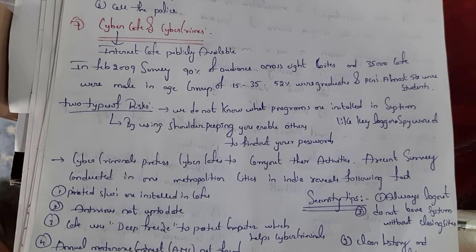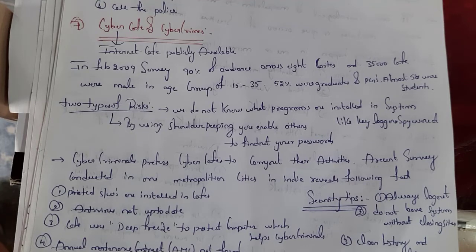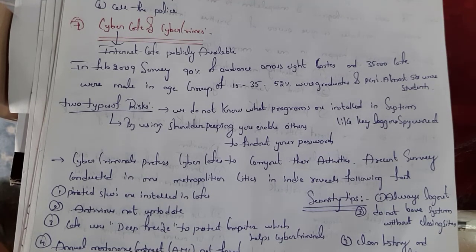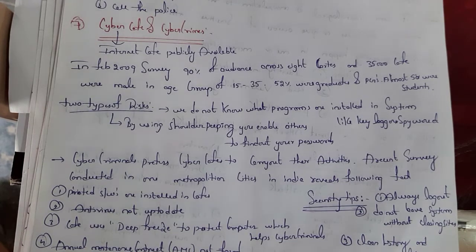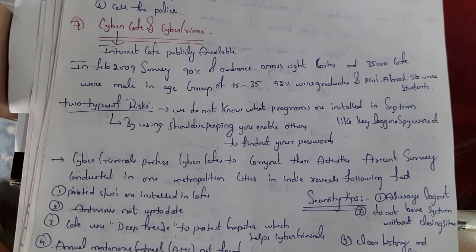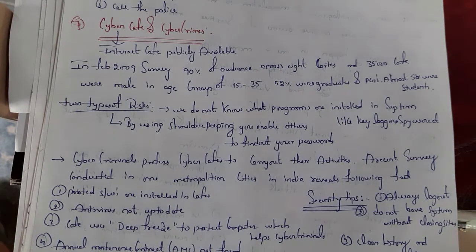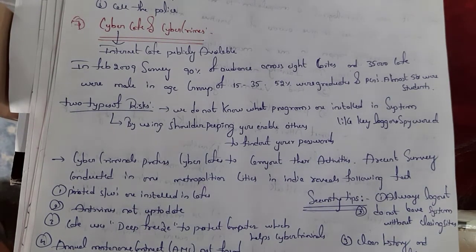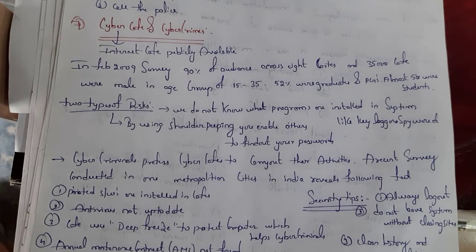Further findings: annual maintenance is not maintained, pornography websites were not blocked, almost every internet cafe owner has no idea about security policies and very little awareness regarding security, and state police do not conduct periodic visits.